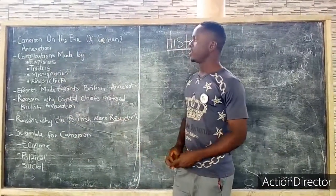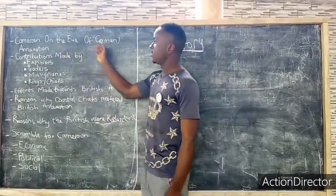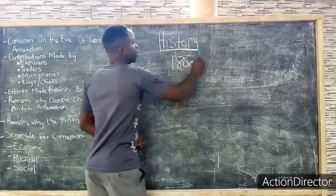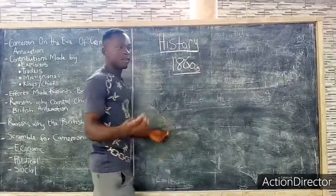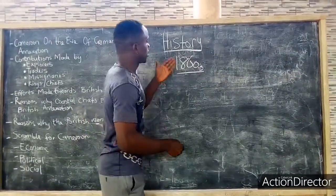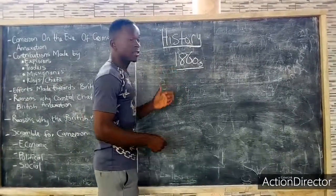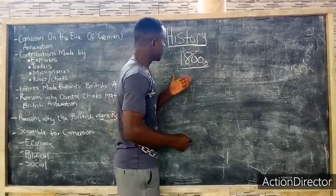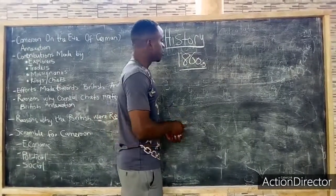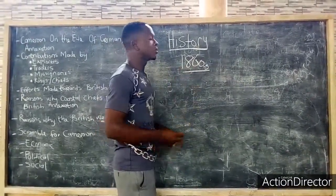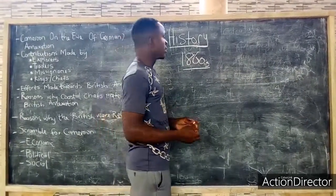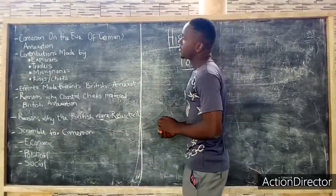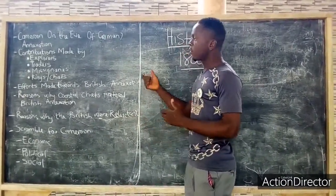We will start with the first part: Cameroon on the eve of annexation. Cameroon before the 1860s — many visitors had visited the coast of Cameroon. We can talk about visitors who came from Cartagena, the Portuguese, some German traders, people from Britain, and people from France. All these visitors came and some of them gave Cameroon different names. When they came to the coast of Cameroon, due to their activities, it stirred up the scramble for Cameroon.